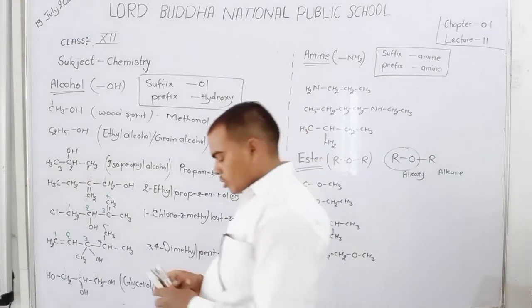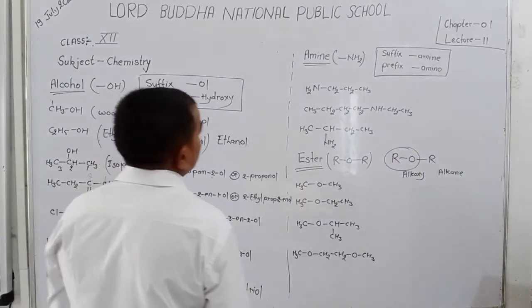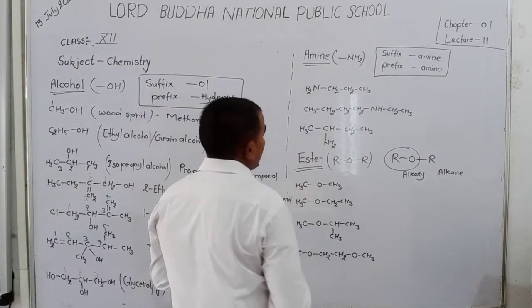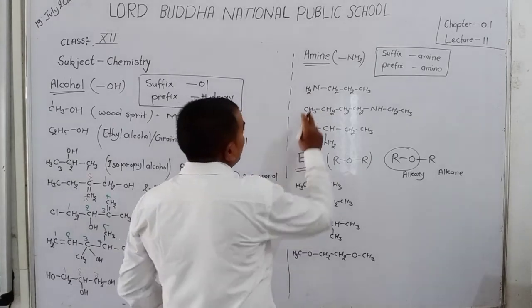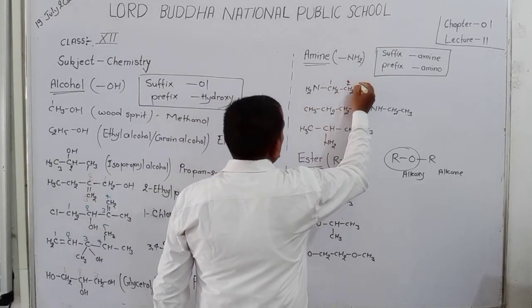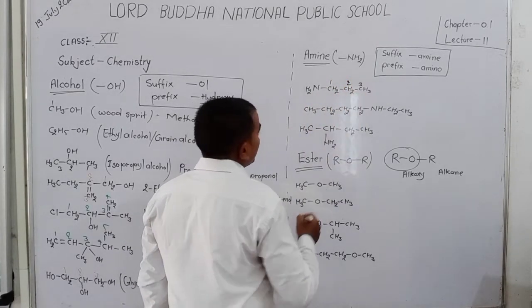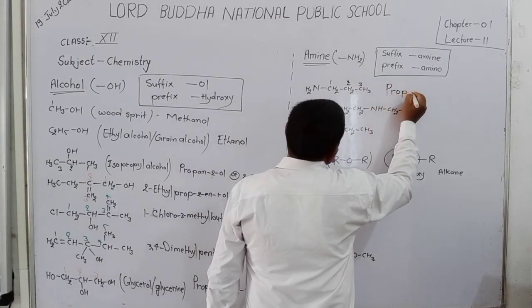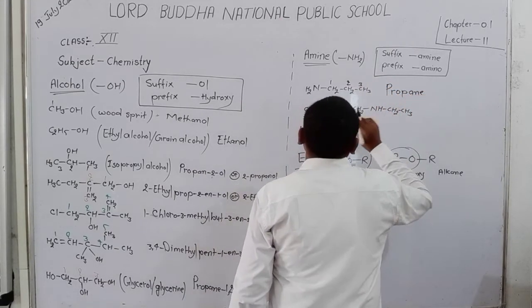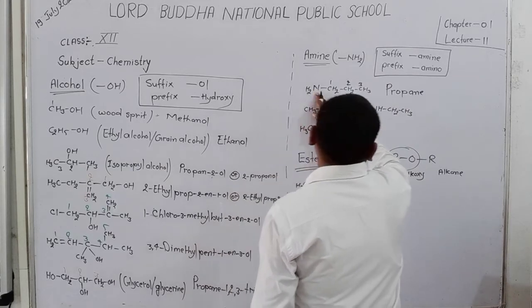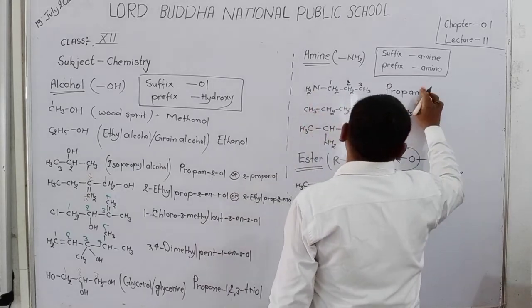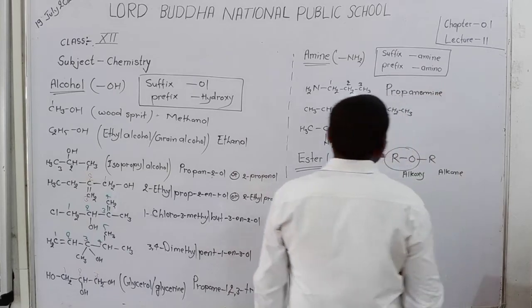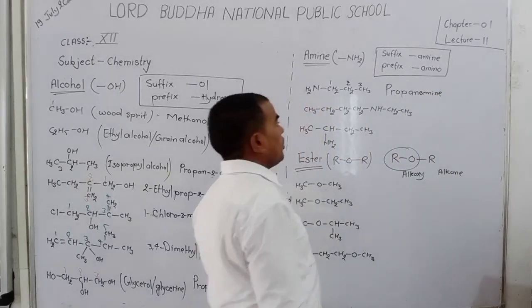Now start the naming of amines. Here in this compound, an amine group is present. Counting starts from here: 1, 2, 3 — three carbons. For 3 carbons: 'prop'. Single bond present, and the amine group is at the first position. So write '-amine'. The name of this compound is Propan-1-amine.